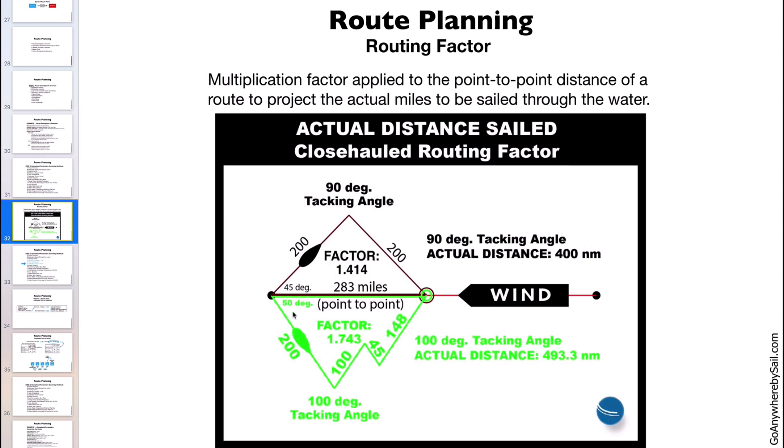So the routing factor I use for 50 degrees off the wind is 1.743. The routing factor I use for sailing 45 degrees off the wind is 1.414.